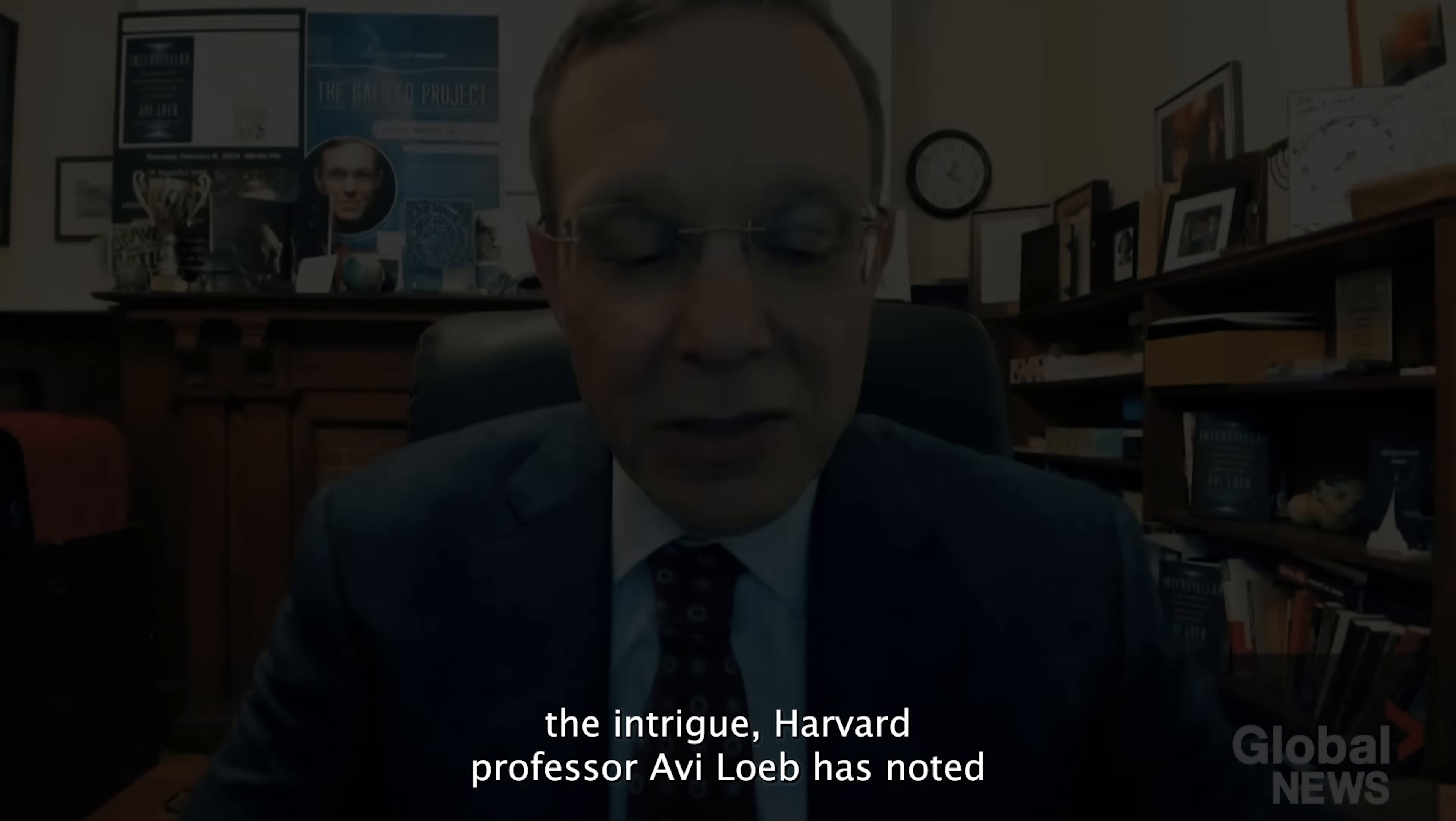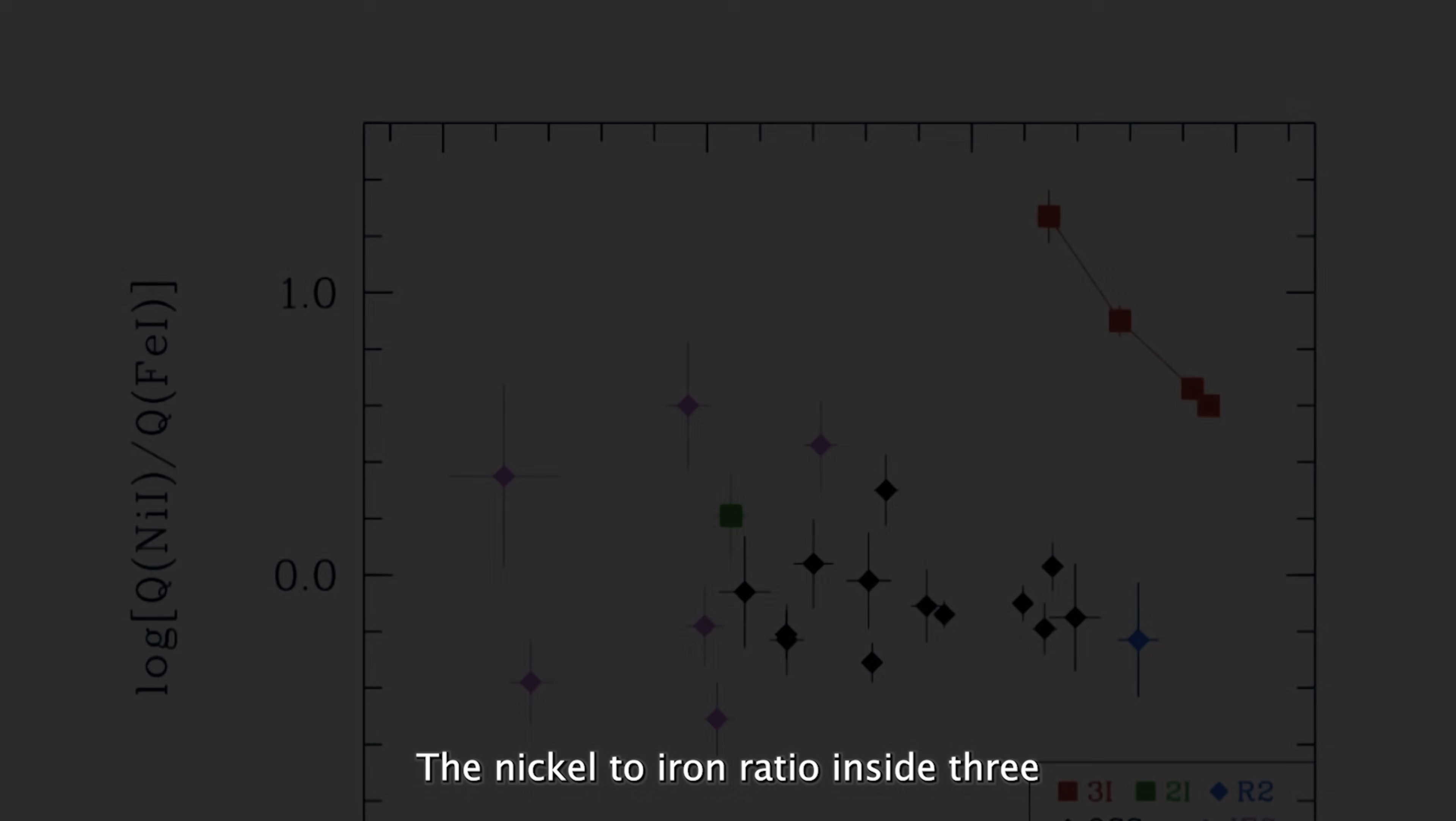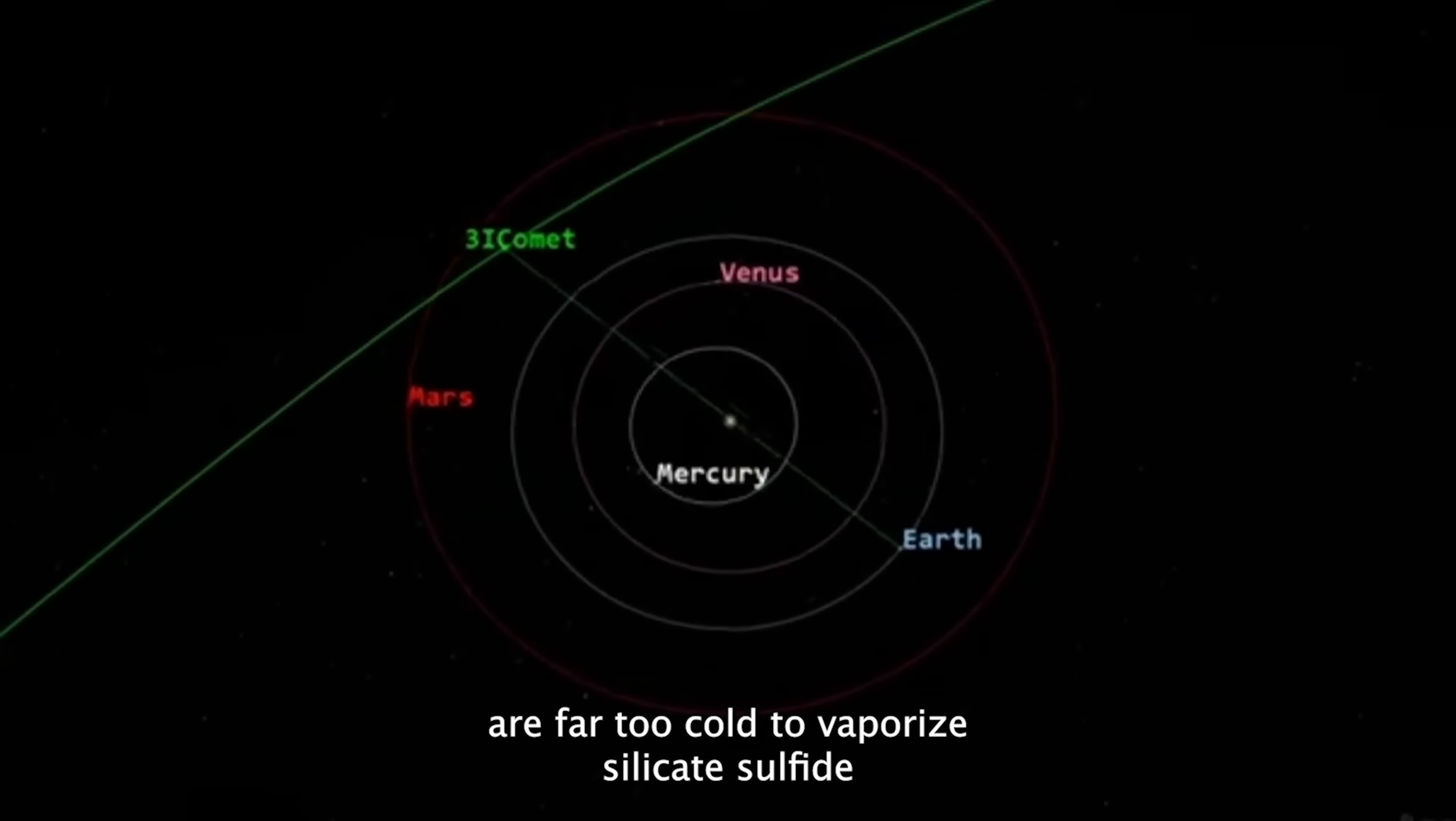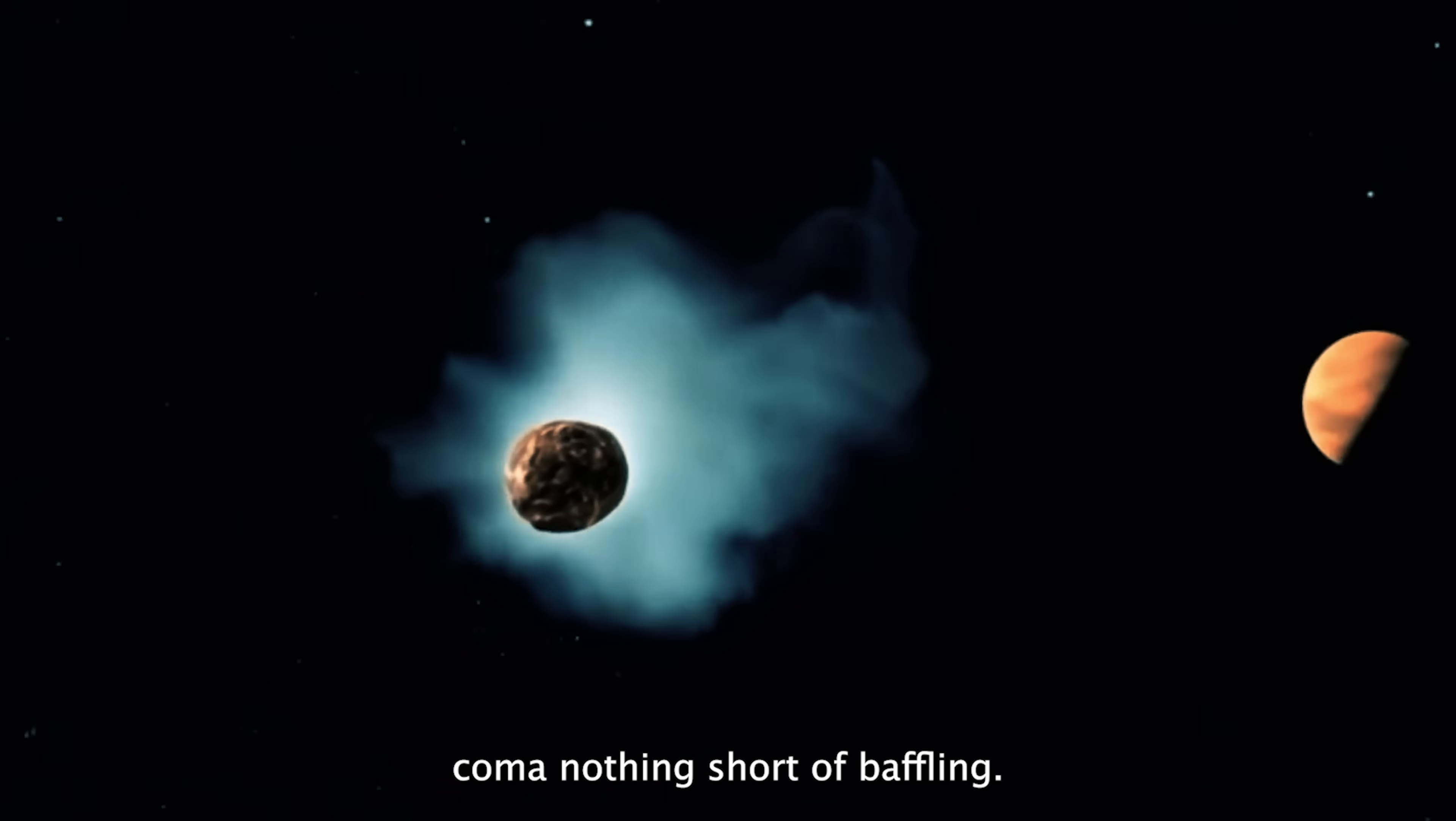Adding to the intrigue, Harvard professor Avi Loeb has noted that while 3i Atlas shows nickel in its chemistry but no iron, new observations reveal iron and nickel drifting in its surrounding gases. The nickel to iron ratio inside 3i Atlas is astonishingly high, so high that scientists can't easily explain it. According to the study's author, the temperatures at the distances where comets are typically observed are far too cold to vaporize silicate, sulfide, or metallic grains containing nickel and iron atoms. That makes the presence of these metals in the comet's coma nothing short of baffling.